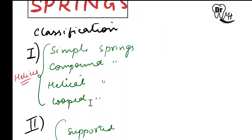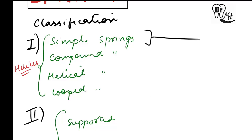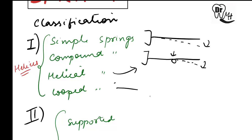In this video we'll focus on springs. Springs can be classified on two bases: based on the number of helices and based on support. Based on the number of helices, these could be simple springs, compound helical, and looped. Simple springs are the ones which do not have a helix. The compound spring is the one in which a helix is incorporated. The helical spring will also have a helix, and the loop spring will have a loop instead.